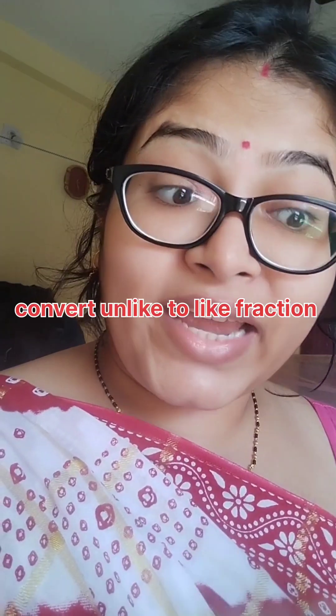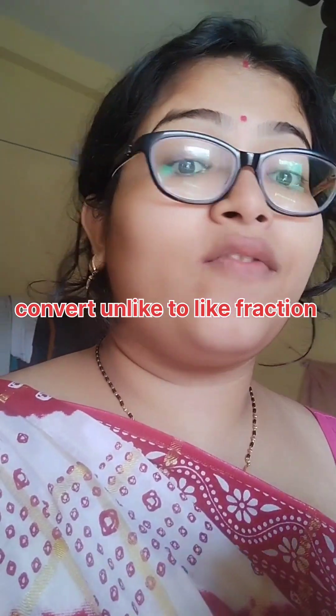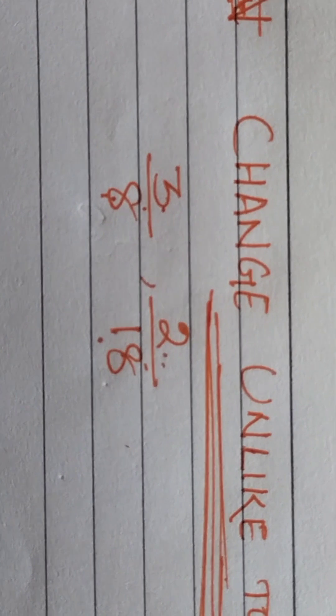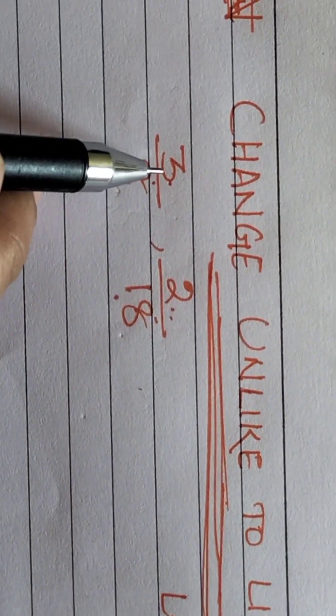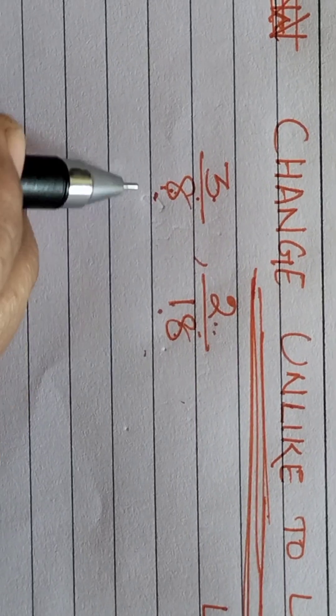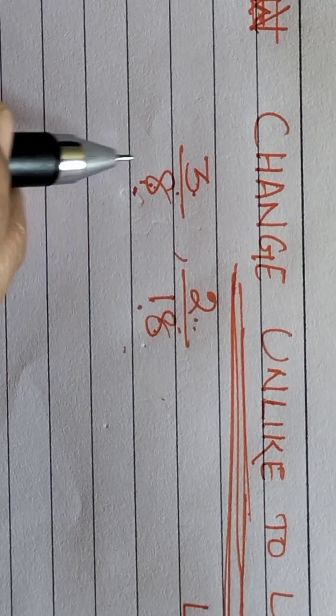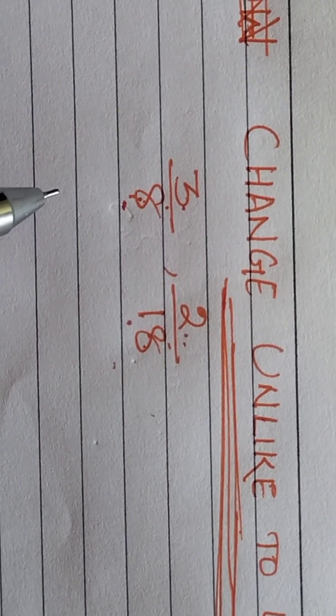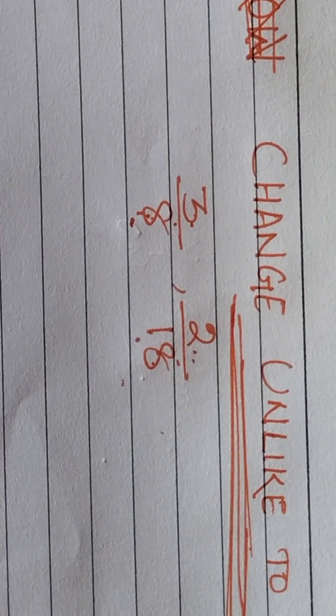How can I change unlike fraction to like fraction? So, change unlike to like fraction. Here, one fraction is 3 by 8 and another one is 2 by 18. Both have different denominators, so they are called unlike fractions. When an unlike fraction is converted into a like fraction, first we take the LCM.